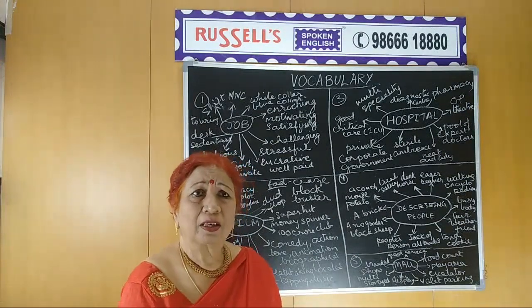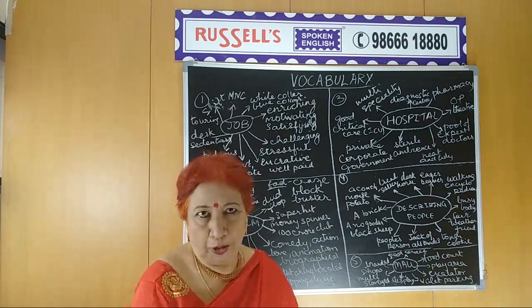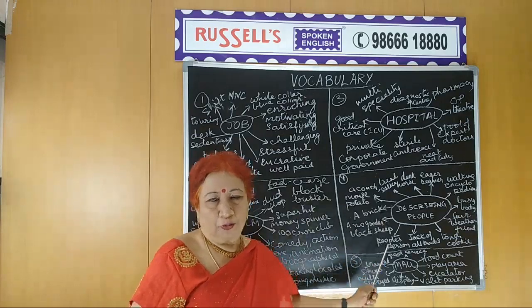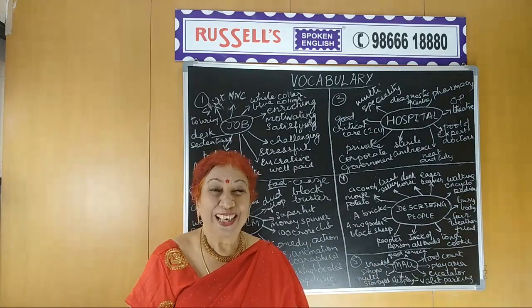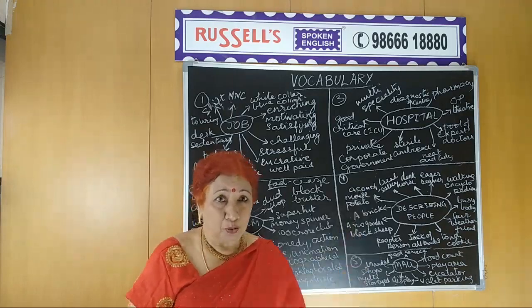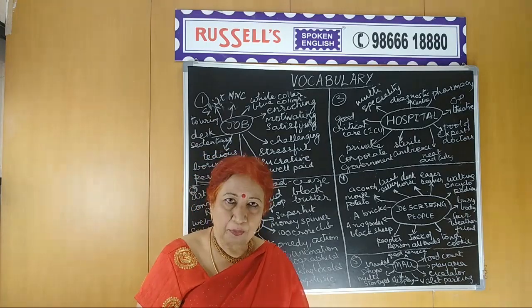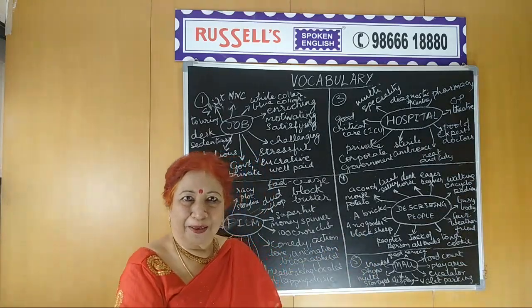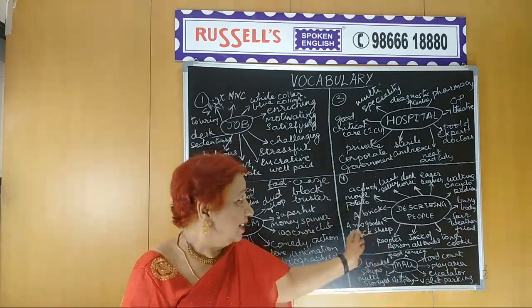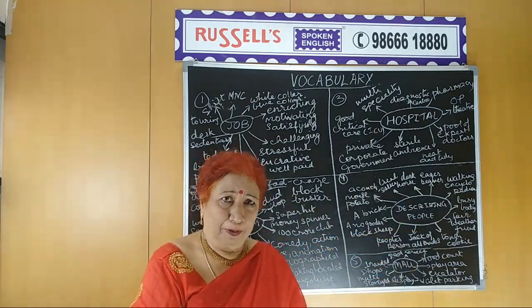Similarly, a couch potato — someone who sits in front of the TV all day long and has no other interest. It's a person who is very idle, loves to waste time, basically lazy. And today the reference has changed — there's also a mouse potato, somebody who's always in front of the computer, doesn't shift their eyes away from it. These are some of the words commonly used when referring to people.